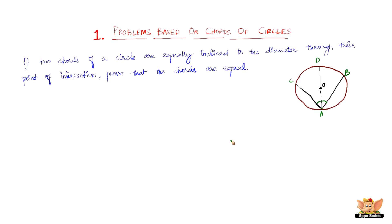In order to start proving, we need to make a small construction: draw OL perpendicular to AC, and draw OM perpendicular to AB. Then we consider triangles OLA and OMA.